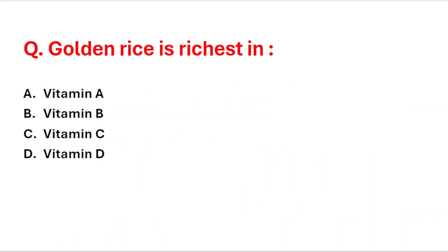Next question: golden rice is richest in — A: vitamin A, B: vitamin B, C: vitamin C, D: vitamin D. Golden rice is richest in vitamin A.